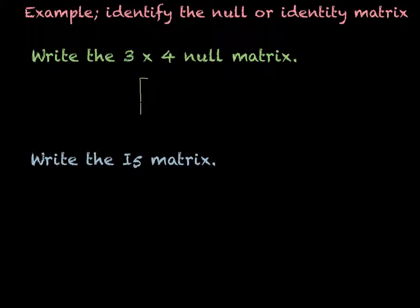Well, 3 means 3 rows, and 4 means 4 columns. So, and they're all 0s. So 0, 0, 0, 0, that's going to make 4 columns. And in all 3 rows, you just put 0s everywhere. So that is the null 3 by 4 matrix.